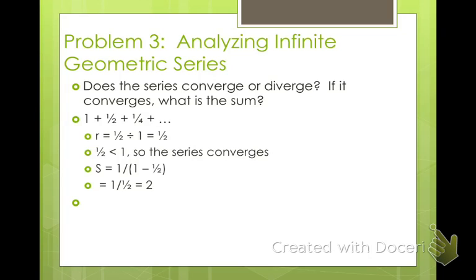What about the summation from n equals 0 to infinity of 2 thirds times negative 5 fourths raised to the power of n? We look at our ratio, which is negative 5 fourths. Taking the absolute value, is 5 fourths greater than 1? Yes, it is. So this series diverges — there's no summation we can possibly make.